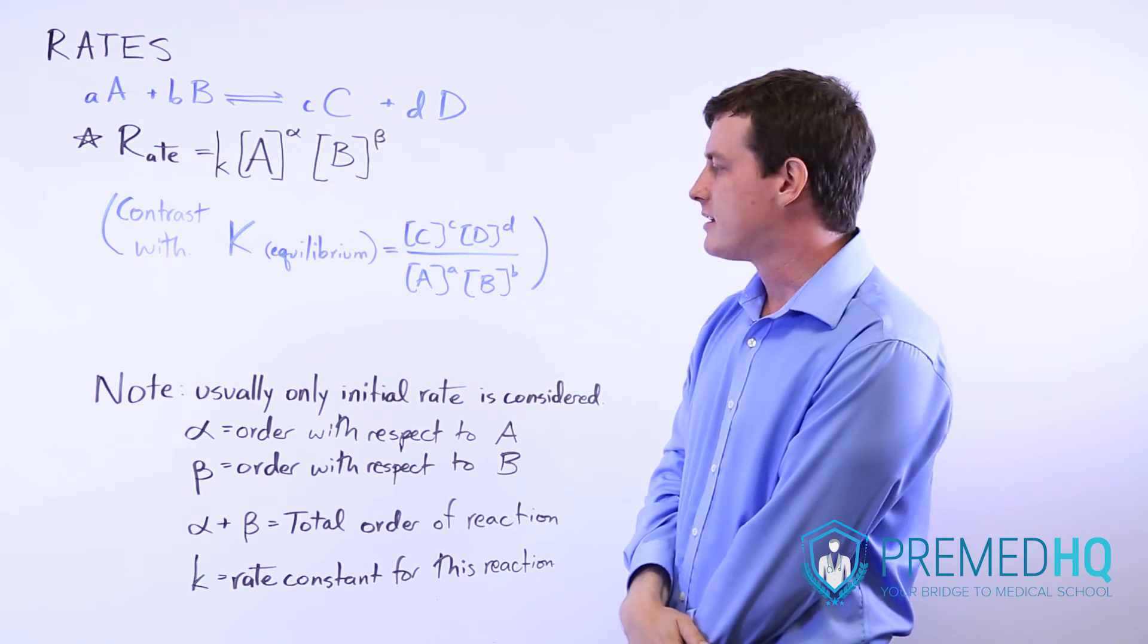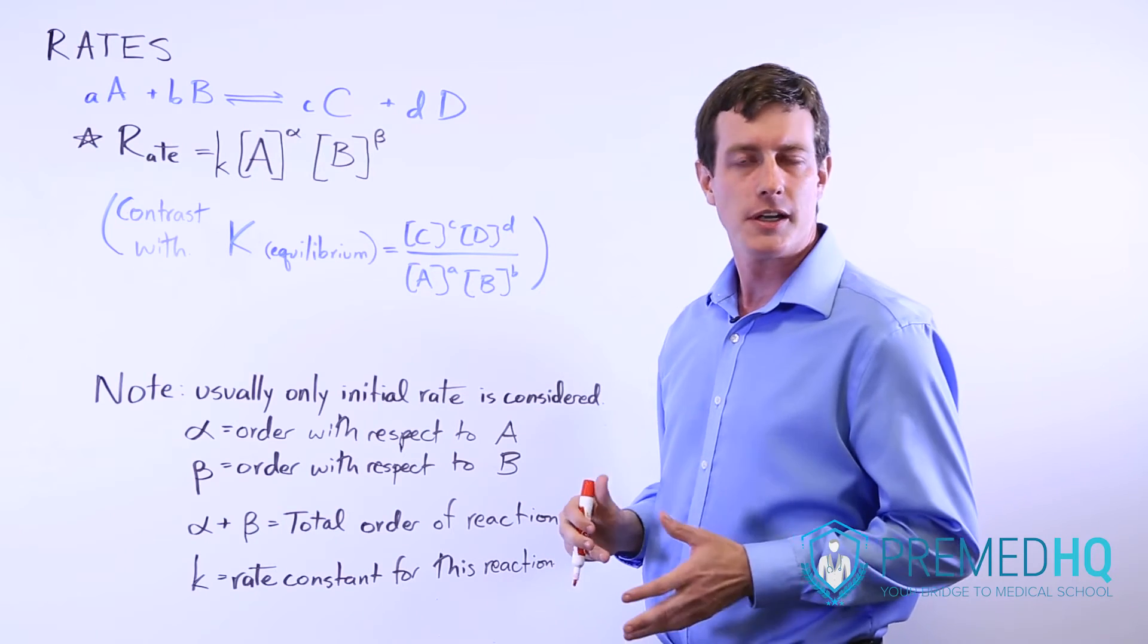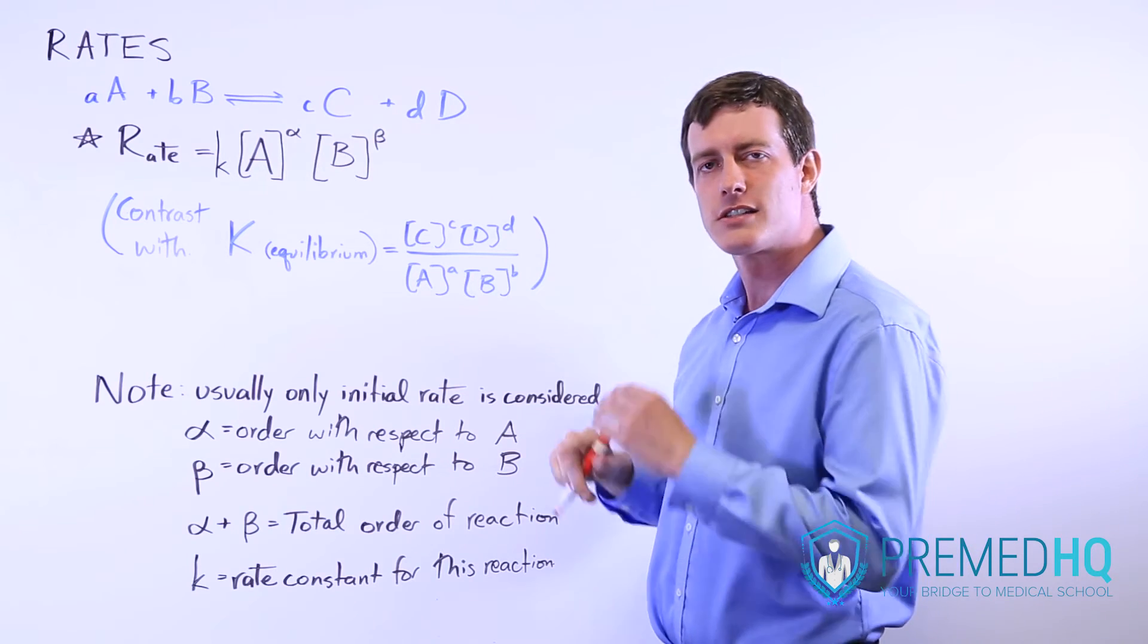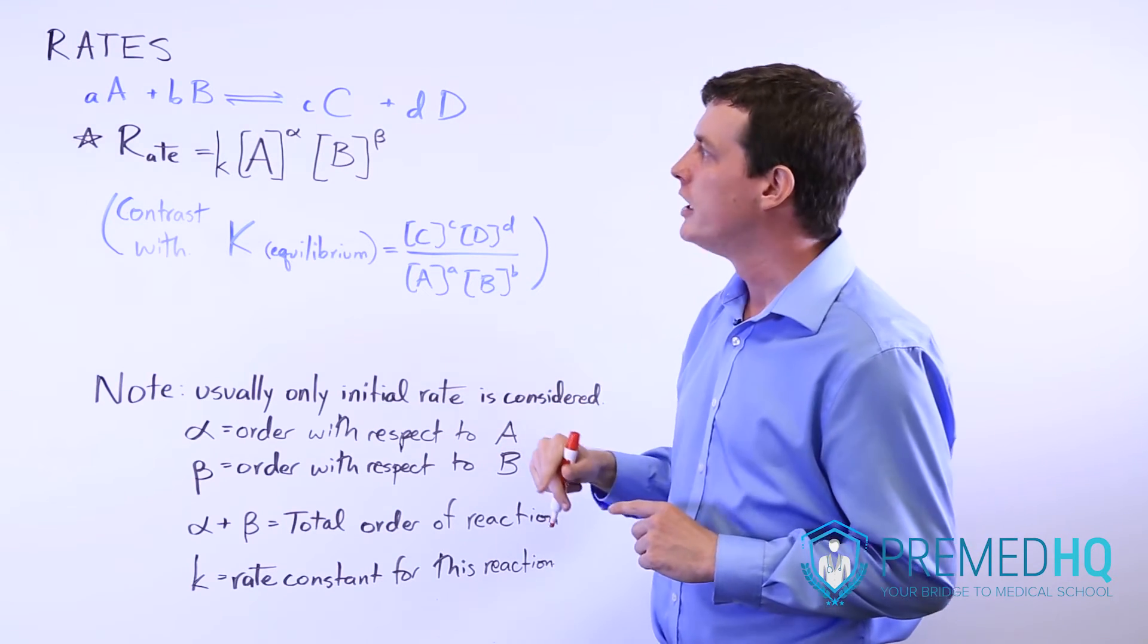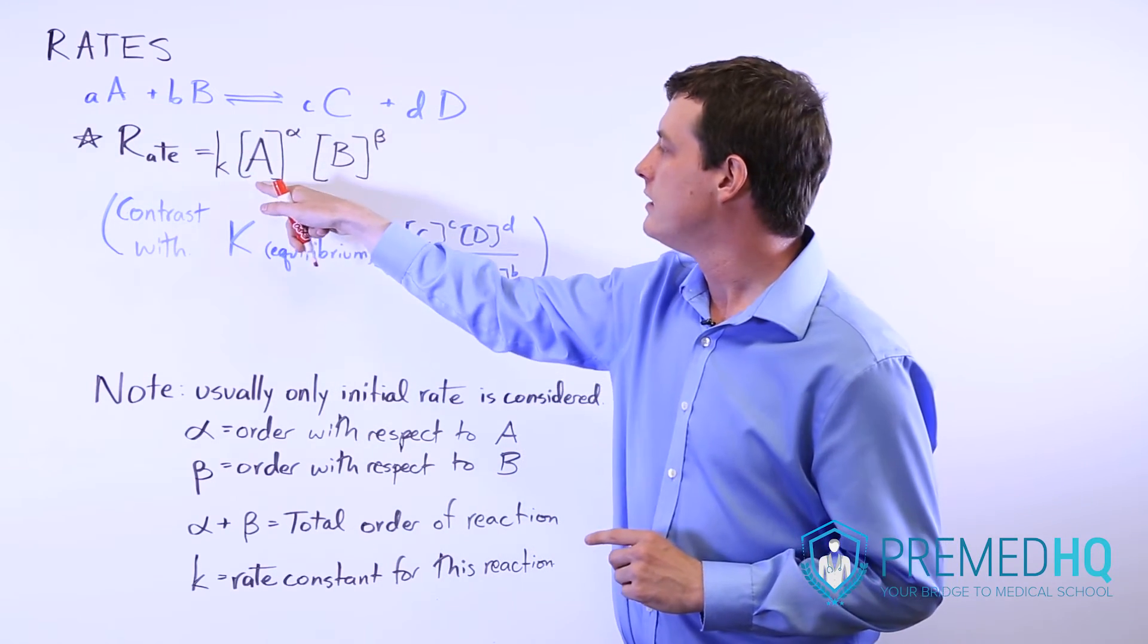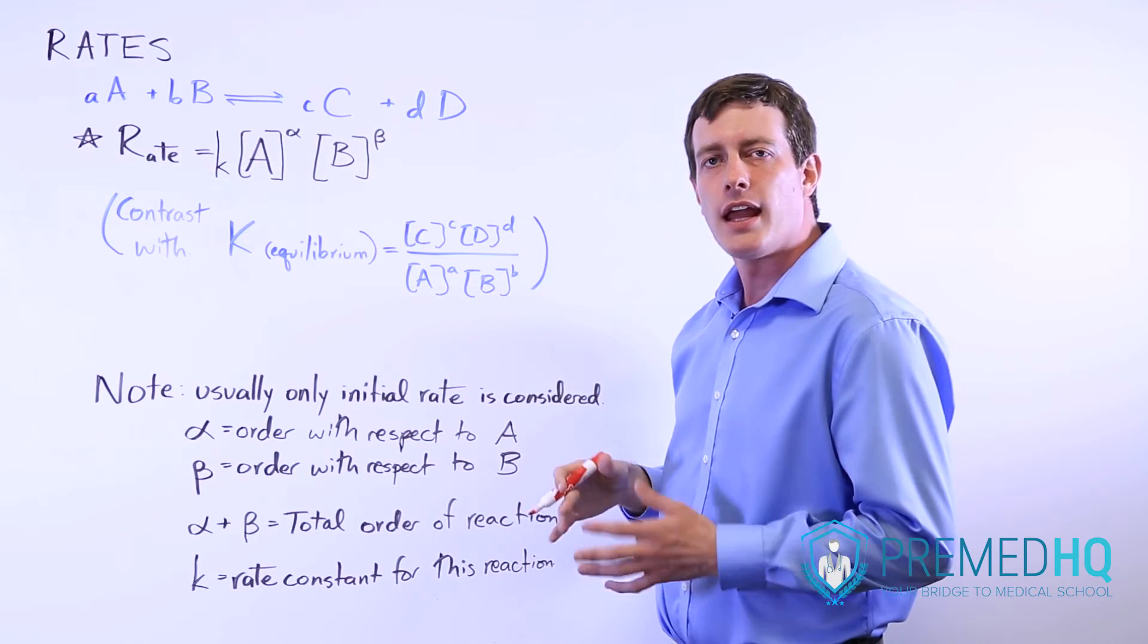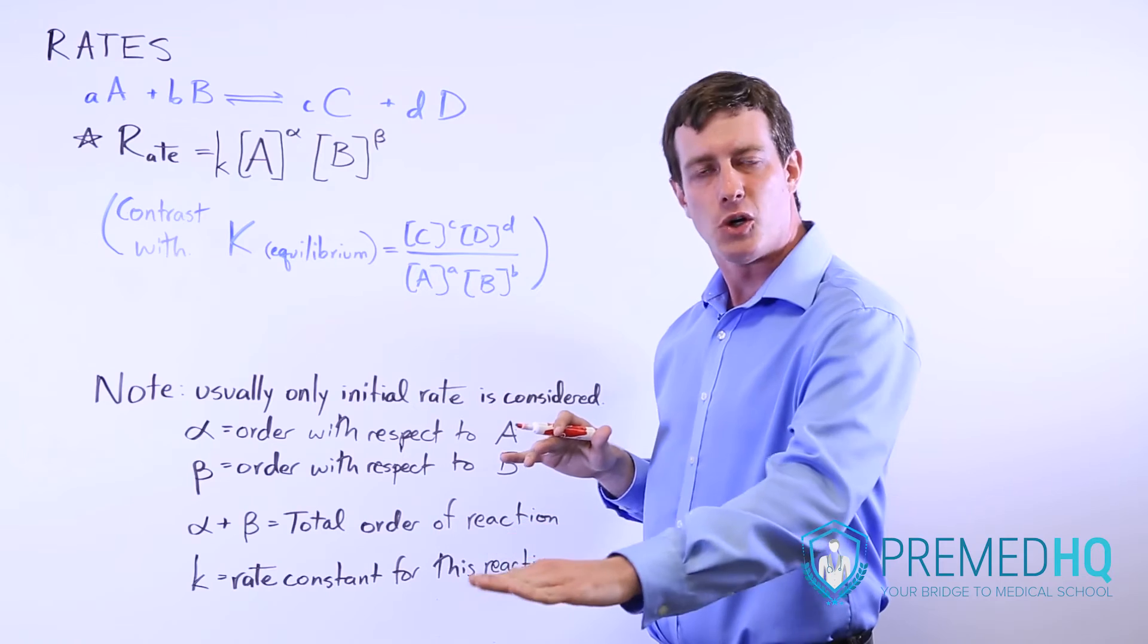Another thing about rates is that you usually only consider the initial rate of the reaction, and the reason for that is that as the reaction continues to move forward, you'll end up depleting some of these reactants and so these numbers will get smaller and the rate will slow down. So rates change over time.